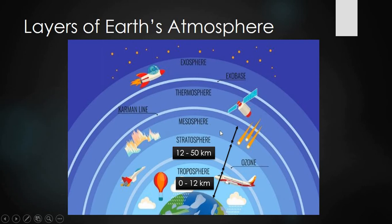After the stratosphere comes the mesosphere. The mesosphere contains meteors and many clusters of methane gases. The range of the mesosphere is from 50 km to 80 km above the Earth's surface.